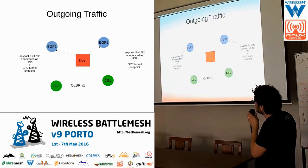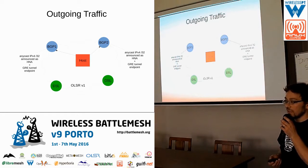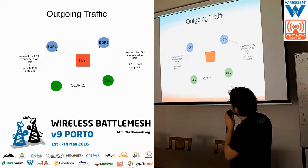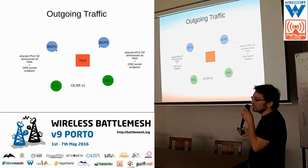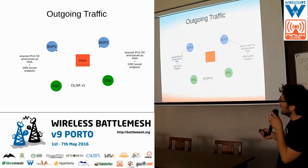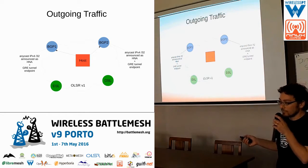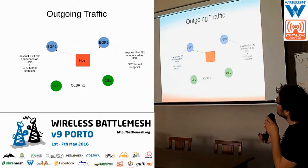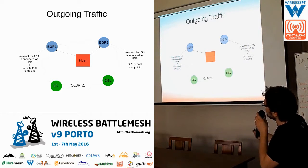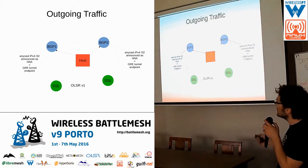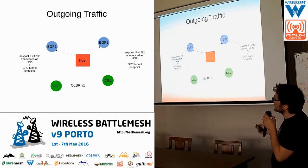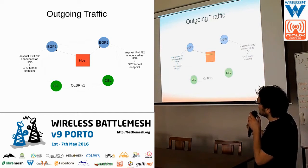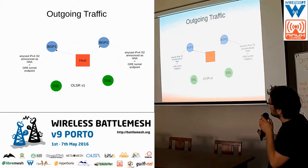We use GRE tunnels, which are very lightweight. The way we use them is quite nice: we announce with an anycast IPv4 /32 address the endpoint of the tunnel, so that if routing changes dynamically, outgoing packets go to the nearest BGP router. We announce the same address on both BGP gateways, and OLSR routing chooses the nearest one for outgoing traffic.